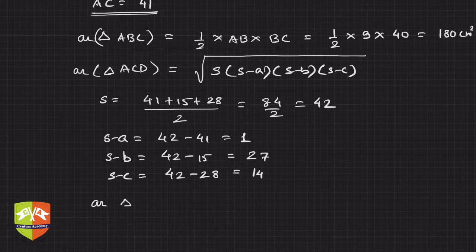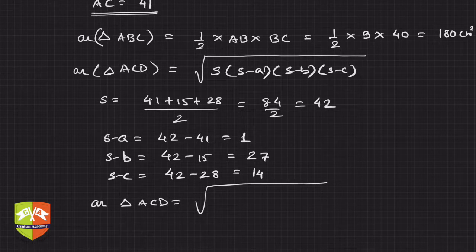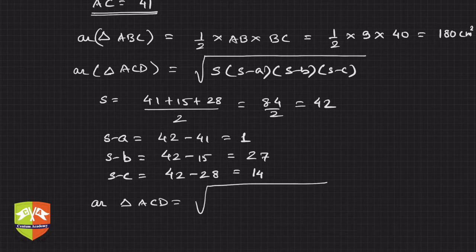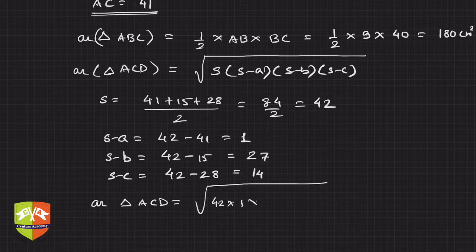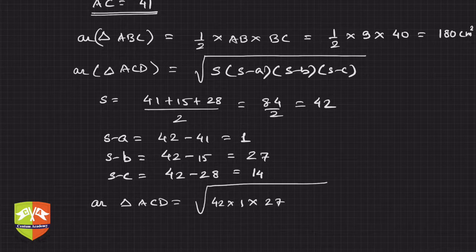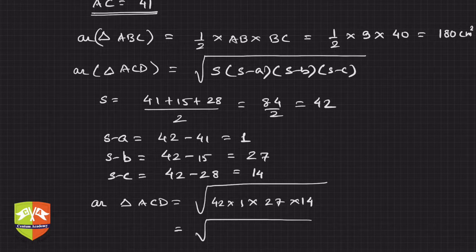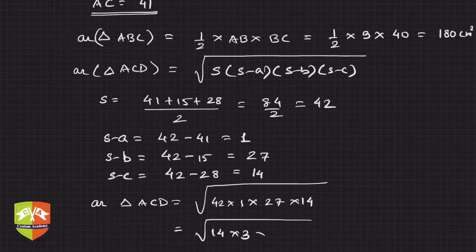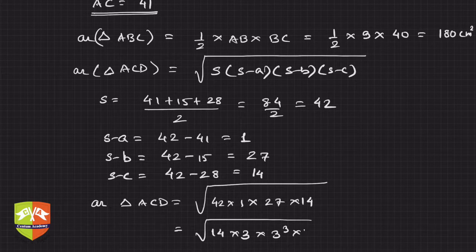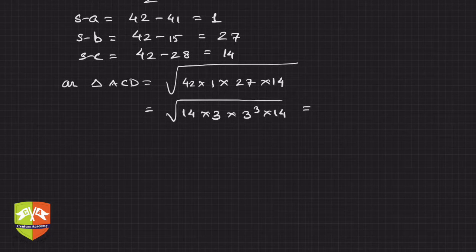Thankfully, we'll get factors with even powers. 42 is 14 times 3, 27 is 3 cubed, and this is 14. So you can easily find the area to be 14 times 9, which is 126 centimeter squared.